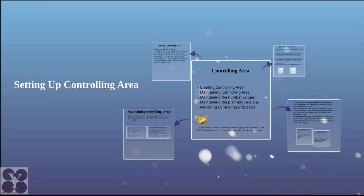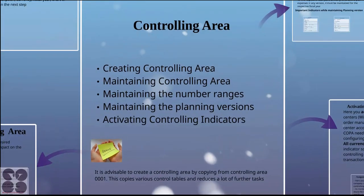Chapter three: setting up controlling area. Setting up a controlling area is as important as setting up a company code or any other structure in SAP. In the controlling area, we create and maintain the controlling area, maintain number ranges, maintain planning versions, and activate controlling indicators.